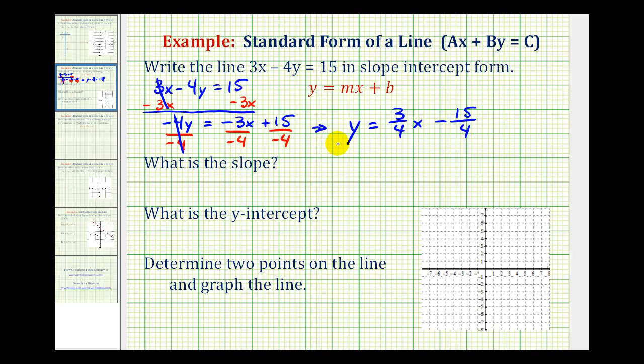So once the equation is in this form, we should be able to easily identify the slope and the y-intercept. Remember m is the slope of the line and b is the y-intercept. We do have to be a little careful here because of the subtraction. So first, the slope of this line would be positive 3 fourths.